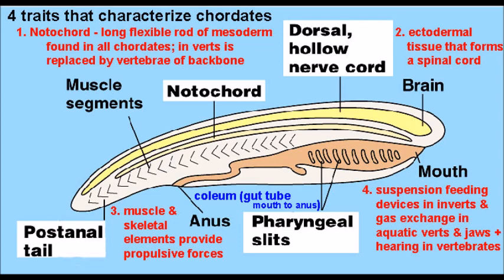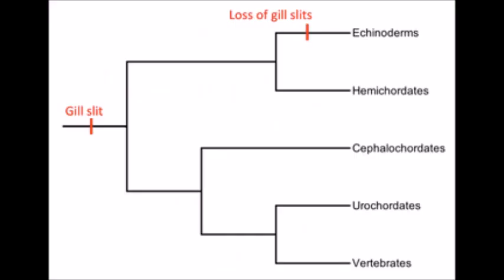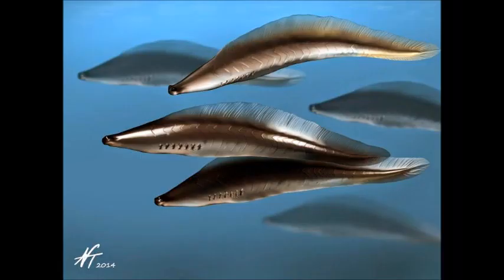For instance, all chordates have pharyngeal slits, a notochord, a dorsal hollow nerve cord, and a post-anal tail at some point in their development. Some chordates retain these characteristics all throughout their lives, but others lose some of the traits. In humans, our pharyngeal slits become different structures in our head and neck, but in fish, the pharyngeal slits become the gills. These structures appeared in our shared common ancestors and have come to be used for different purposes in the years hence.